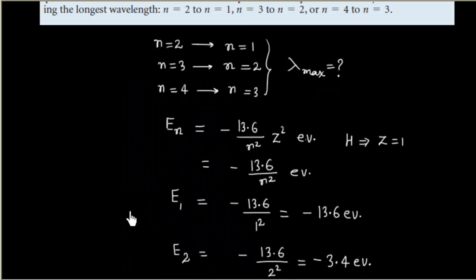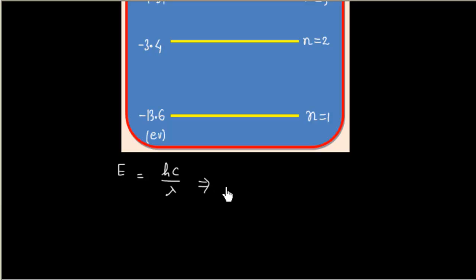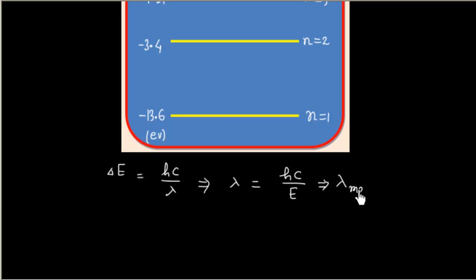We have to find the longest wavelength, lambda max. Since E = hc/λ, we can write ΔE = hc/λ, which means λ = hc/ΔE. So if we want lambda maximum, the energy difference ΔE must be minimum.